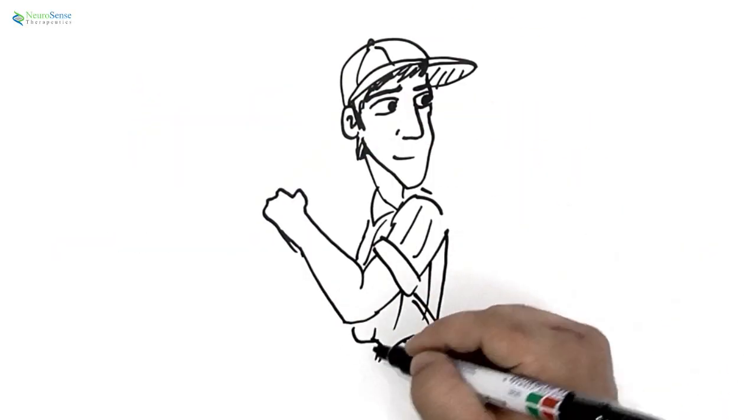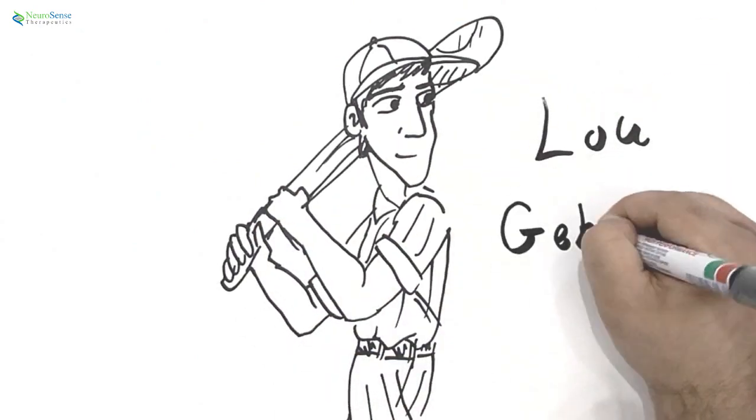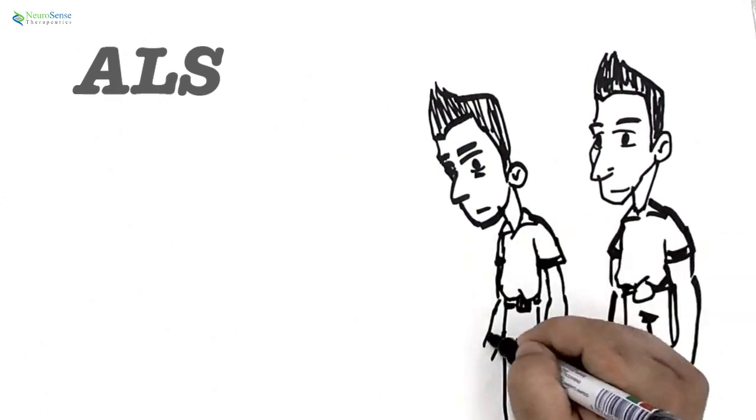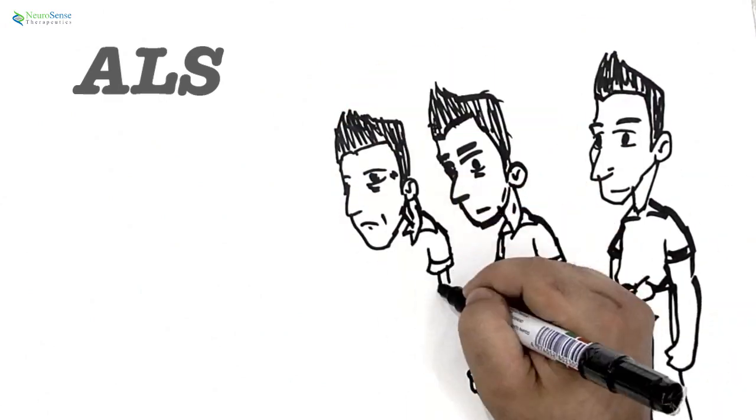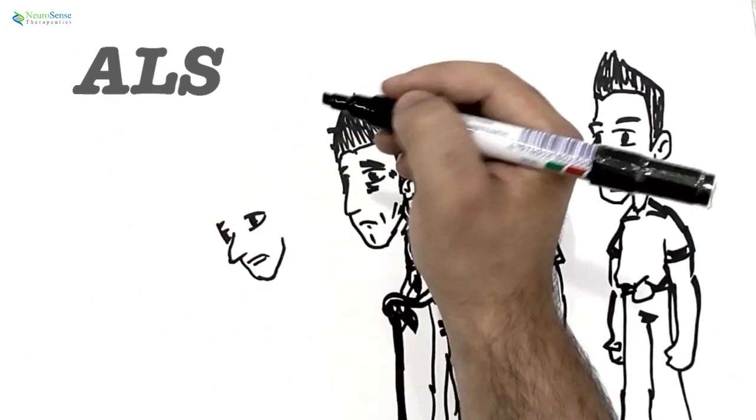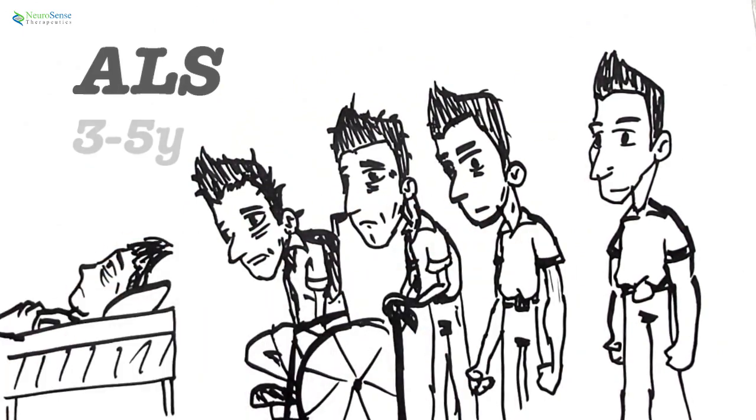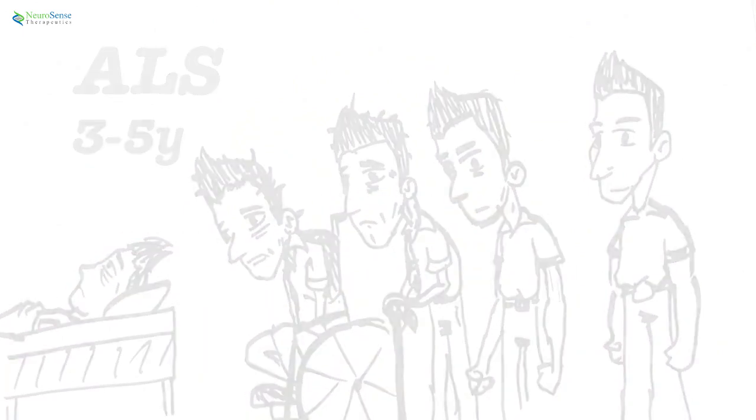ALS, also called Lou Gehrig disease after the famous baseball player who died of it, is a neurodegenerative disease which causes healthy, completely functioning people to become gradually paralyzed over a few short years and leads ultimately to death within three to five years of diagnosis.